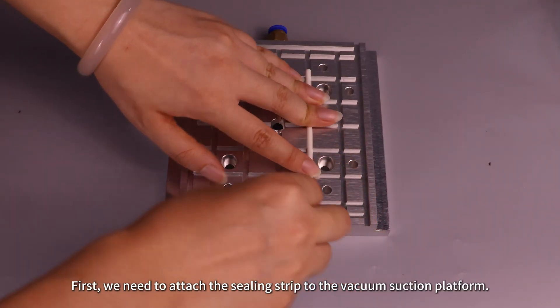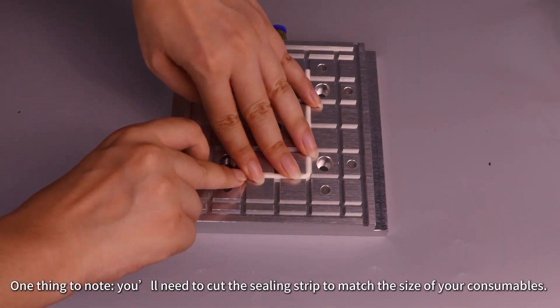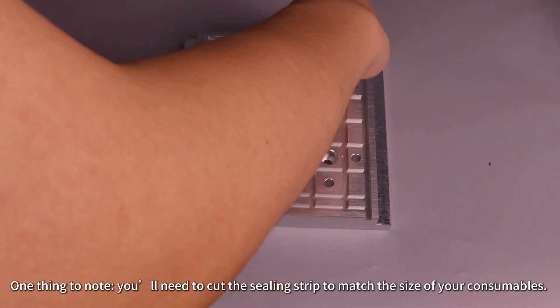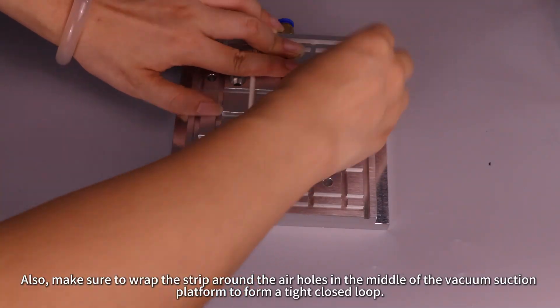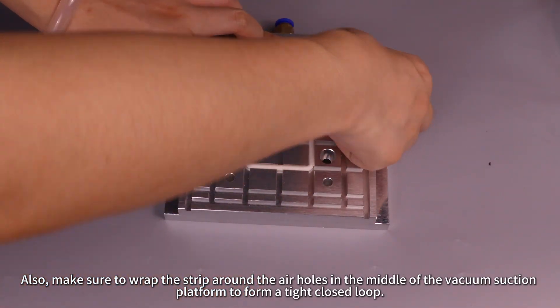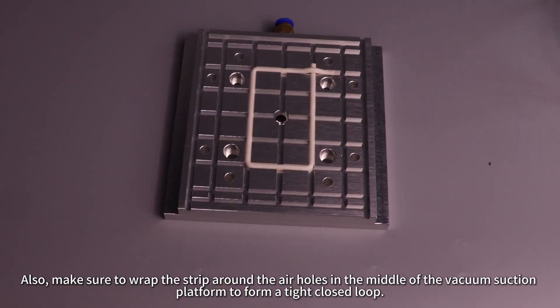First, we need to attach the sealing strip to the vacuum suction platform. One thing to note, you'll need to cut the sealing strip to match the size of your consumables. Also, make sure to wrap the strip around the air holes in the middle of the vacuum suction platform to form a tight closed loop.